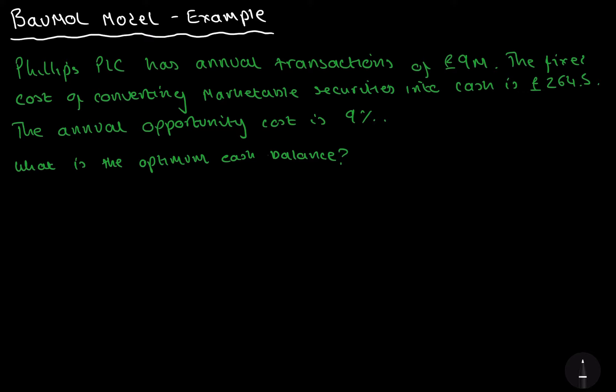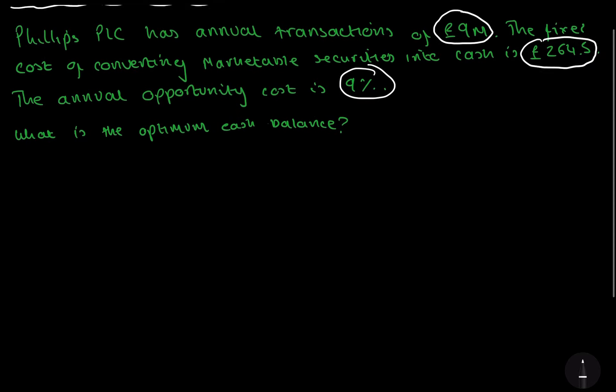So what is the optimum cash balance? Let's break this down. First of all what's the main information? The annual transaction is £9 million. Let's circle that. That's how much we need, how much we're spending. Cost of converting marketable securities is £264.50 and annual opportunity cost 9%. Okay, so now we've got those.